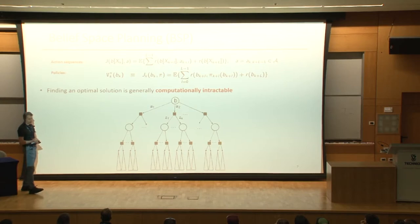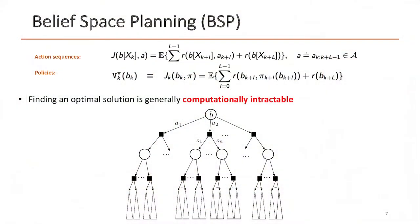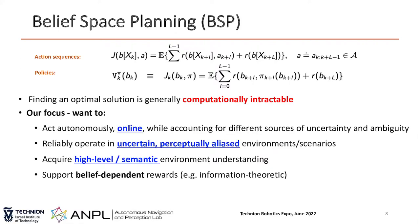Going back to the conceptual level: if you look at the original planning problem — regardless of whether you use action sequences or policies — solving it is computationally intractable. We need to construct a belief tree, reasoning about all possible actions and for each action all possible observations. This is clearly intractable theoretically. And yet we want to operate autonomously online, even when there is aliasing in the environment with objects that look alike, and we want to acquire high-level semantic understanding of the environment.